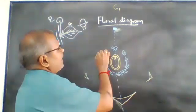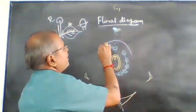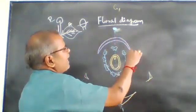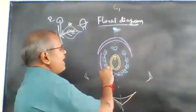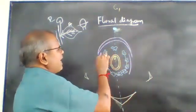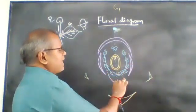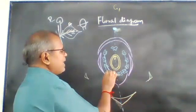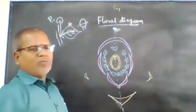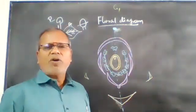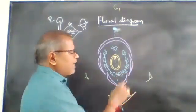Next is the corolla. There are 3 special types of petals: the standard petal or vexillum, the wing petal or alae, and the keel petal or carina.